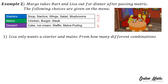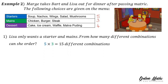Question 1: Lisa only wants a starter and mains. From how many different combinations can she order? According to the fundamental counting principle, there are 5 choices for starters and 3 for mains. Therefore, 5 times 3 is 15 different combinations.